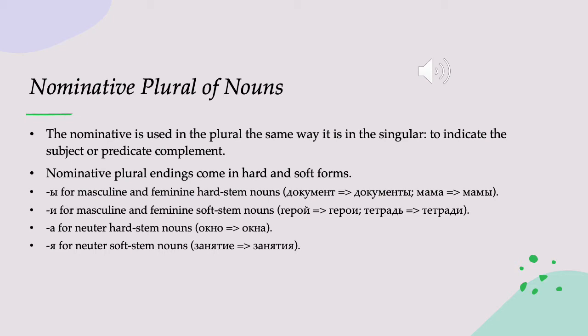So what are these nominative plural endings? They are going to be Ы, that hard back Ы sound, for masculine and feminine hard stem nouns. So dokument, a document or an ID, becomes dokumenty with the hard Ы. Mama, mama, becomes mamy with that hard Ы.